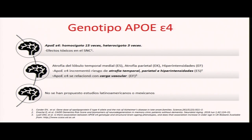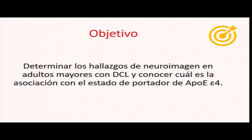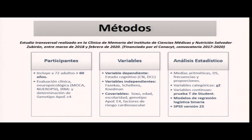Hay estudios que han demostrado que el estado de portador de la apolipoproteína confiere riesgo para tener atrofia temporal, parietal e incluso carga de lesión vascular. No hay estudios en México que demuestren esta asociación, por eso nos dimos a la tarea de determinar los hallazgos de neuroimagen en adultos mayores con deterioro cognitivo leve y conocer la asociación con el estado portador de APOE. Estudiamos 72 adultos mayores de 60 años con evaluación cognitiva completa, clasificados en cognitivamente normales y aquellos con deterioro cognitivo leve.